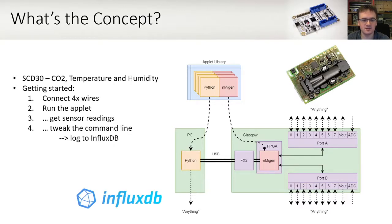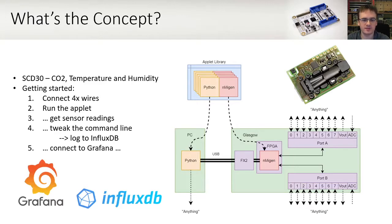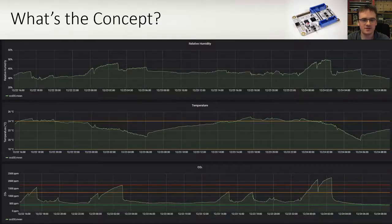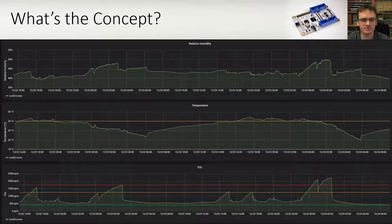If you tweak the command line slightly, you can record those sensor readings into InfluxDB. If you connect that to Grafana, you can then find yourself going from zero to graphs in less than five minutes. InfluxDB and other logging options are built into Glasgow and they come for free.